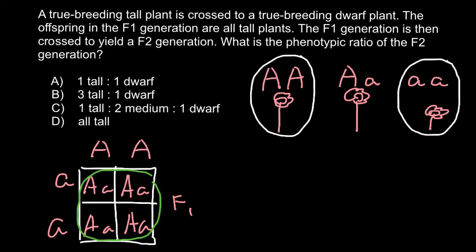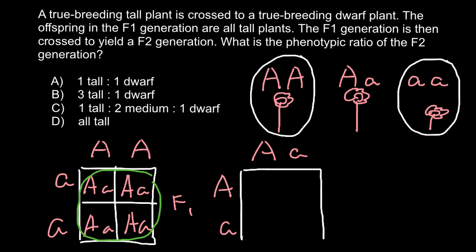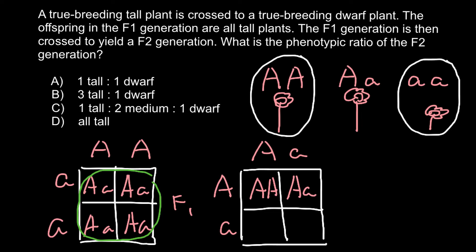And if we self-pollinate the F1 generation, that means one parent is heterozygous and the other parent is also heterozygous. In the following F2 generation we are going to get the following ratios of genotypes and phenotypes: capital A capital A, capital A small a, capital A small a, and small a small a.